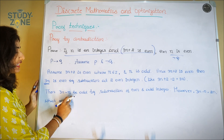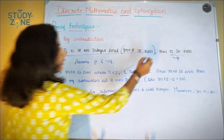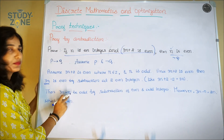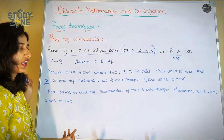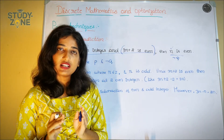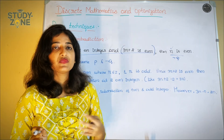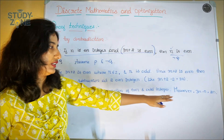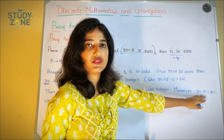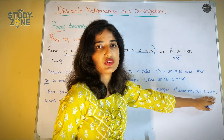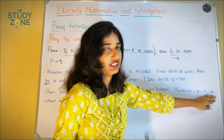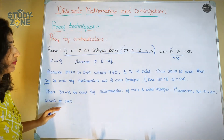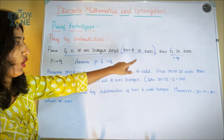Then 3n minus n is odd, because we have n as odd by taking negation q. So 3n minus n is odd by subtraction of an even and an odd integer. However, 3n minus n equals 2n. The definition of an even integer is 2n. So this is the contradiction, because we had taken negation q as n being odd.